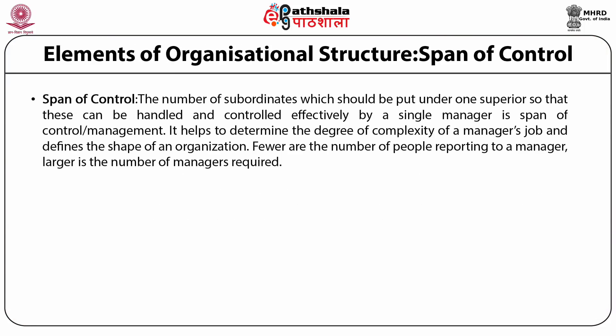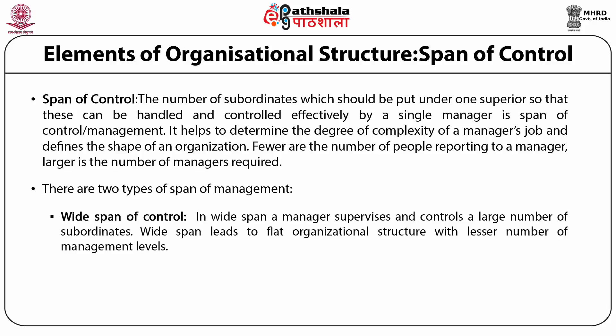We will discuss the span of control. The number of subordinates which should be put under one superior so that they can be handled and controlled effectively by a single manager is known as the span of control or span of management. It helps determine the degree of complexity of a manager's job and defines the shape of an organization. There are two types: wide span and narrow span. In wide span, a manager supervises and controls a large number of subordinates, leading to a flat organizational structure with fewer managerial levels.